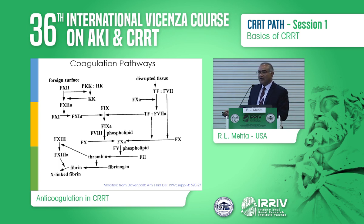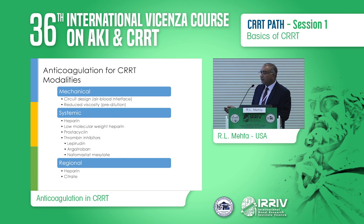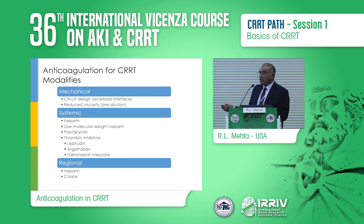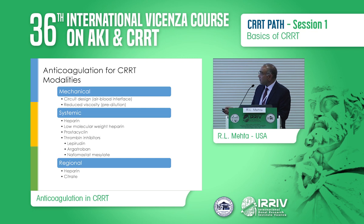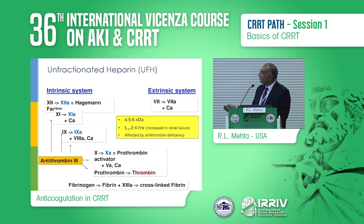Onwards to the coagulation cascade. This is a cartoon demonstrating both the intrinsic and extrinsic pathways for coagulation, and you can see that all of these are coming into play. What we have to address is what techniques we can apply. The first is the mechanical aspect — I've already talked about reducing viscosity with pre-dilution and making sure the air-blood interface isn't the area where clotting starts. Now I'll discuss the pharmacological options: when you look at unfractionated heparin, it acts through antithrombin-3, predominantly in the intrinsic system.